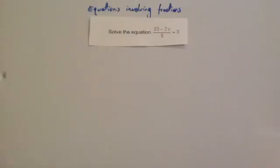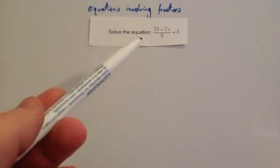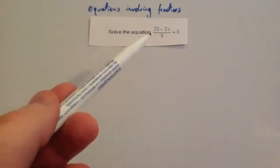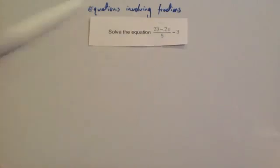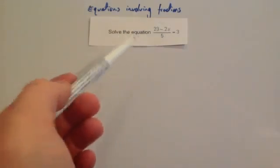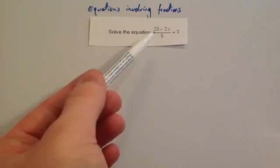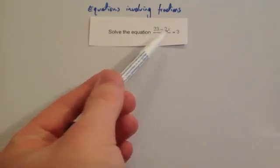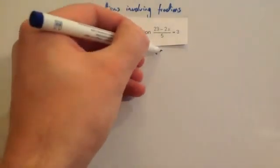In this video we're going to look at how to solve some equations involving fractions. We've got: solve the equation 23 subtract 2x divided by 5 equals 3. If I was solving an equation like this, what I would want to do is get rid of this large divide by 5 first of all. So let's times both sides by 5.